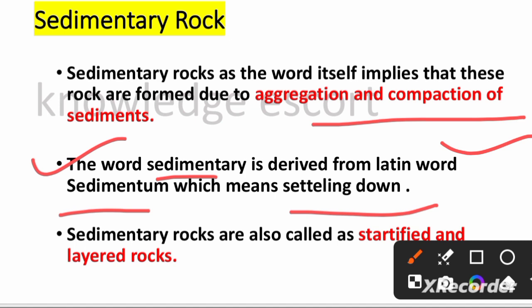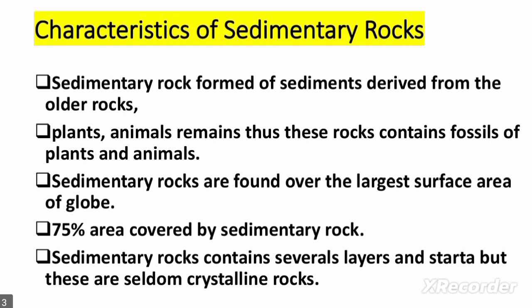Sedimentary rocks are also known as stratified rocks or layered rocks. Igneous rocks, as we saw, are formed from the solidification of lava, while sedimentary rocks are formed from the compaction and aggregation of sediments. Because sediments settle and accumulate in layers, these rocks are called layered or stratified rocks.